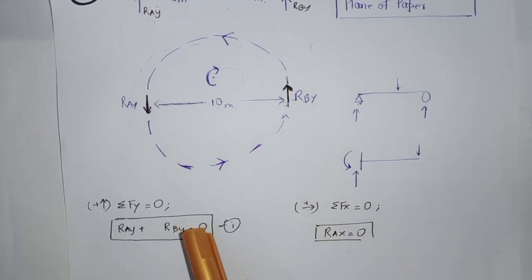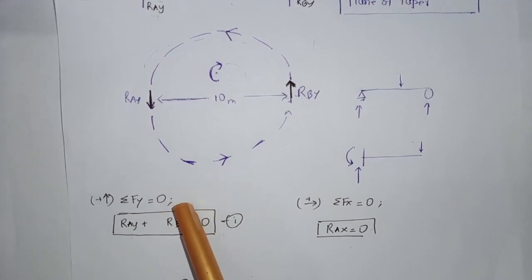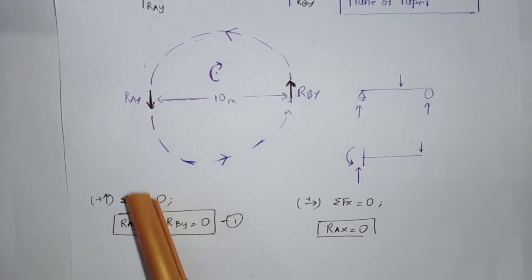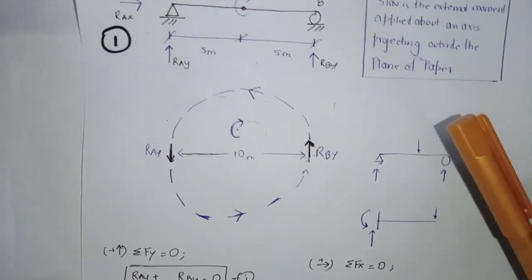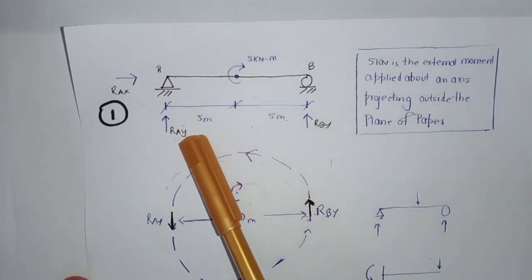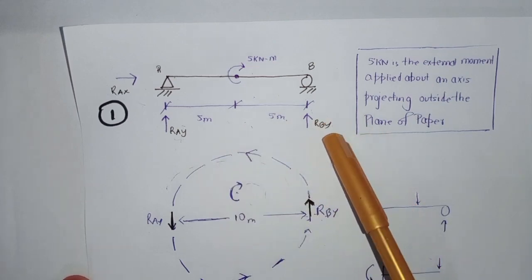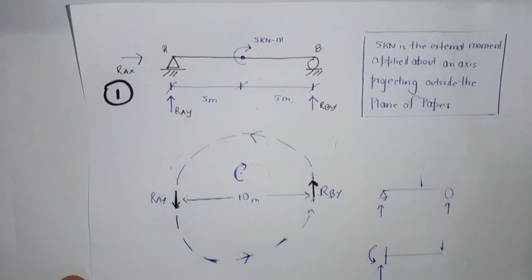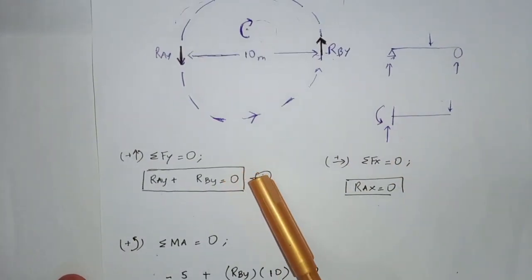Applying the second equation of equilibrium and summing up all the forces in the vertical direction as zero, let's take the sign convention that upward forces are positive. We assumed that RAY and RBY both are acting in the upper direction, and there are no other external forces acting in the vertical direction. So RAY plus RBY equals zero. Let's call this equation one.